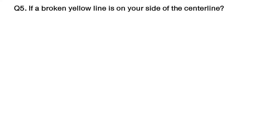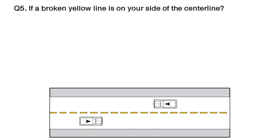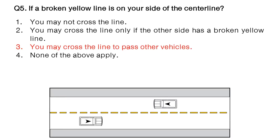Question: if a broken yellow line is on your side of the center line? Option number 1: you may not cross the line. Option number 2: you may cross the line only if the other side has a broken yellow line. Option number 3: you may cross the line to pass other vehicles. Option number 4: none of the above apply. The answer is option number 3: you may cross the line to pass other vehicles.